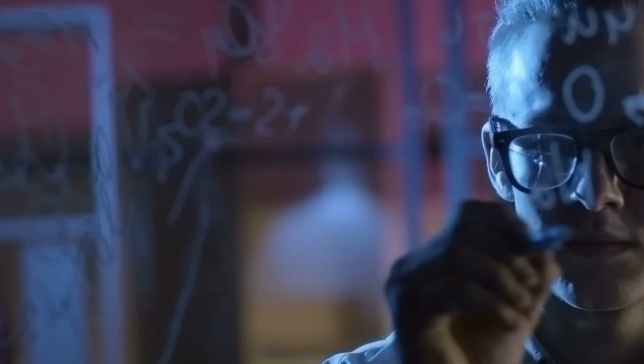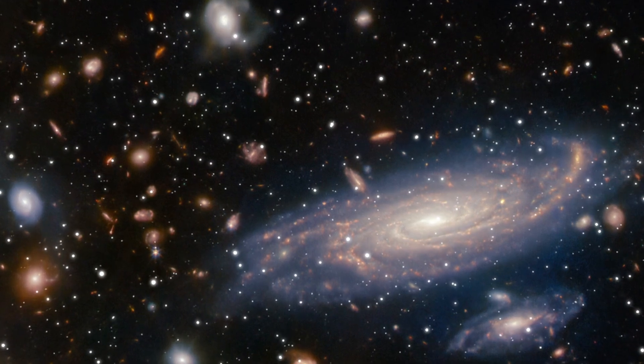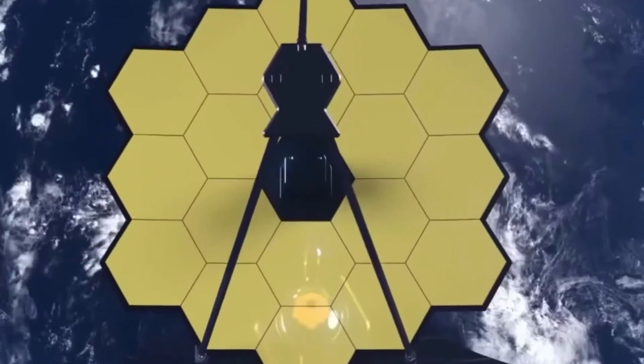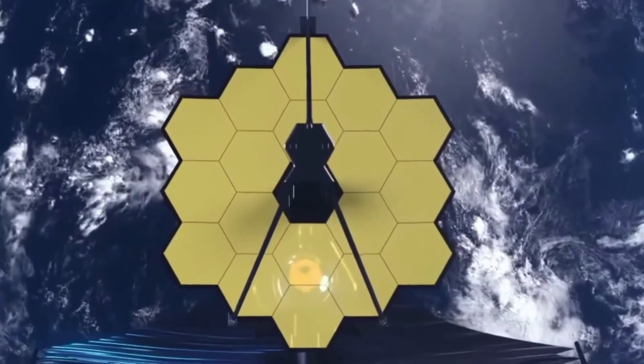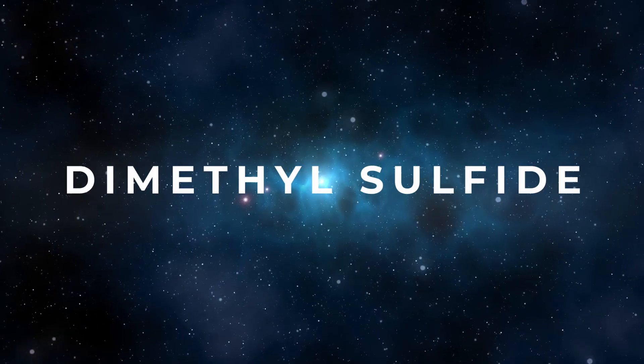Confirming this discovery will require extensive data analysis and verification. We delve into the details of this intriguing revelation, focusing on the exoplanet K2-18b, as our beloved James Webb Space Telescope once again makes an incredible discovery: dimethyl sulfide on its surface.